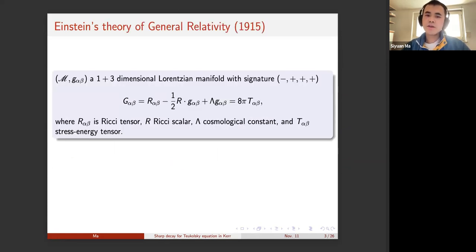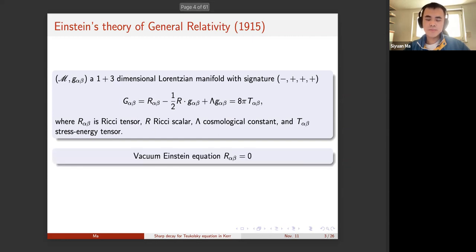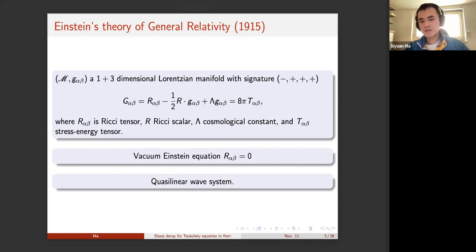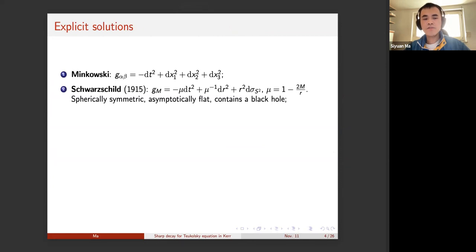Let's start from the theory of general relativity. This is a 3+1 dimensional Lorentz manifold with signature minus plus plus plus for the metric, satisfying the Einstein equation. I will consider the vacuum Einstein equation, the Ricci tensor equal to zero. In some suitable gauge, this is a quasi-linear wave system. There are some explicit solutions: the most trivial one is Minkowski spacetime, and a non-trivial one is the Schwarzschild spacetime, with metric function mu equals one minus two m over r.